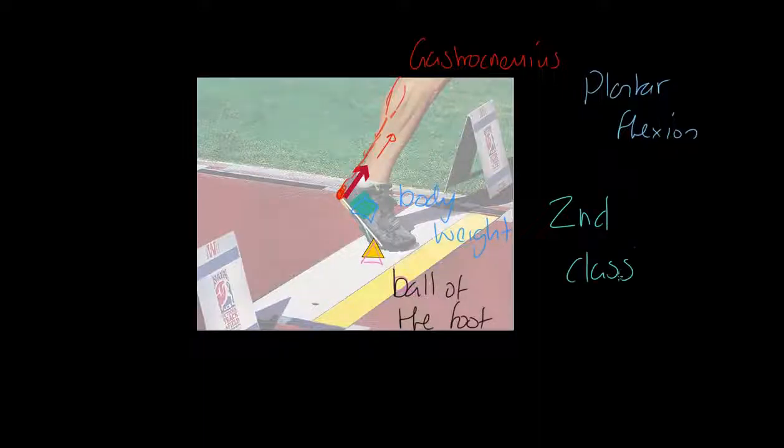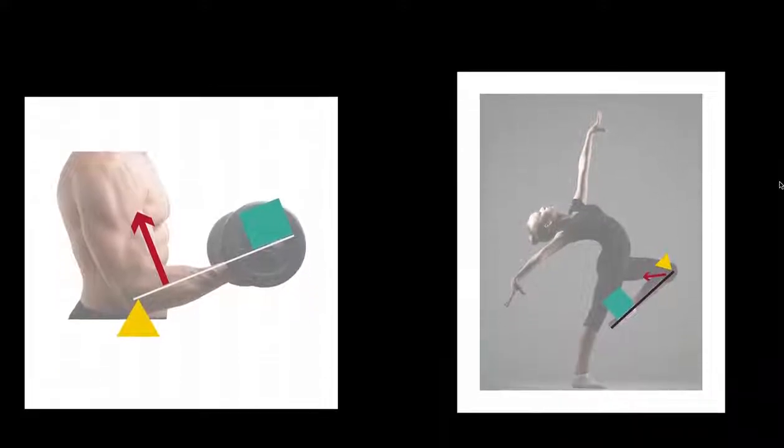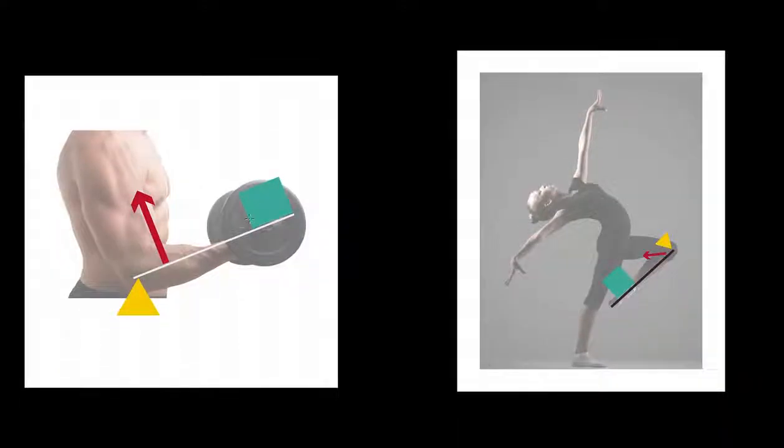We've got our third class lever system. We've already looked at the bicep curl, and I'm pretty sure you could probably just fill that in for yourself. But just to clarify, we've got the elbow, which is the fulcrum. We've got the bicep, which is inserting down onto the radius, unlike the tricep which inserts down onto the ulna. And then we've got the dumbbell. We have the effort in the middle. For one, two, three, think F, L, E, effort. This is a third class.